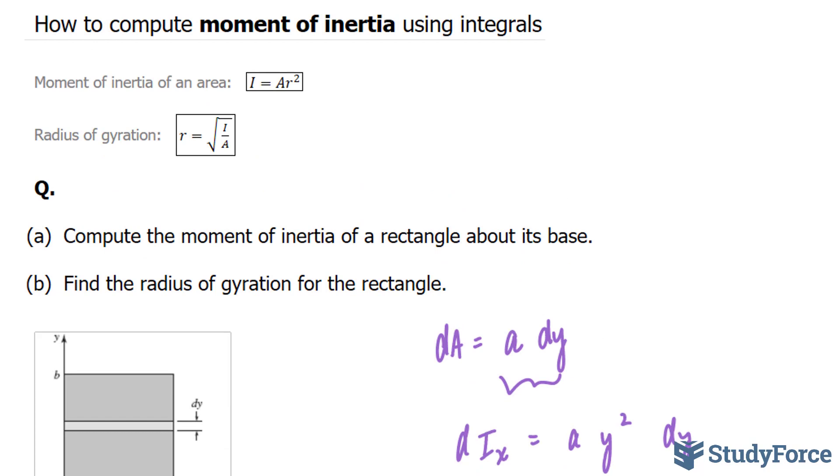That being said, if we solve for r in the moment of inertia formula that we had earlier, we should end up with r is equal to the square root of I over A. And we use r subscript x and r subscript y to denote the radii of gyration about the x and y axis respectively.